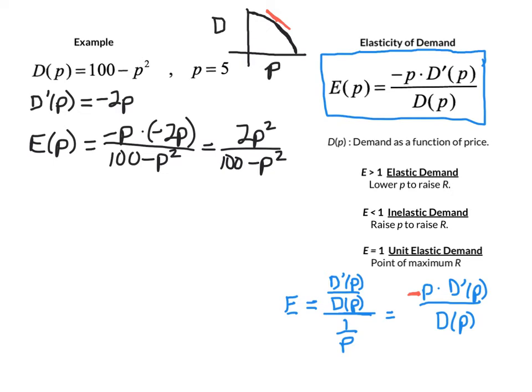So we get this function of P, and then we just evaluate it at a certain point in the market. Here we're being told that we're working at a market price of $5. So elasticity of our product at 5 is 2 times 5 squared divided by 100 minus 5 squared. So that gives us 50 over 75, which reduces to 2 thirds.